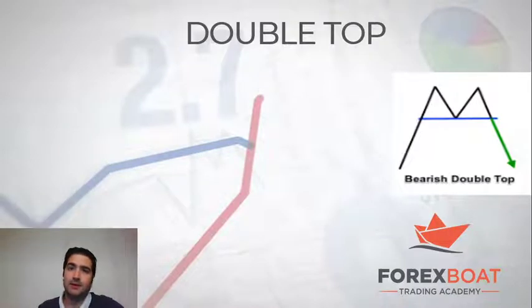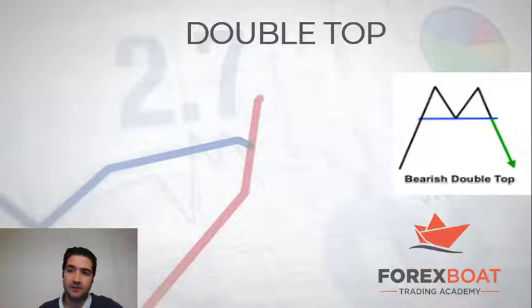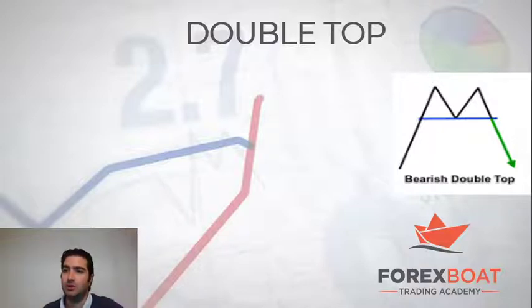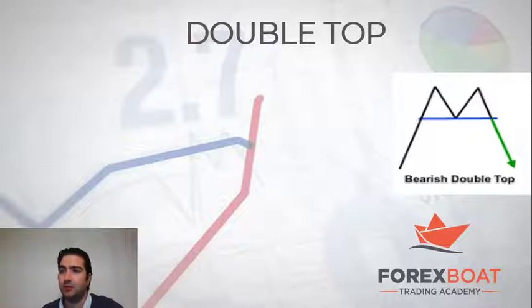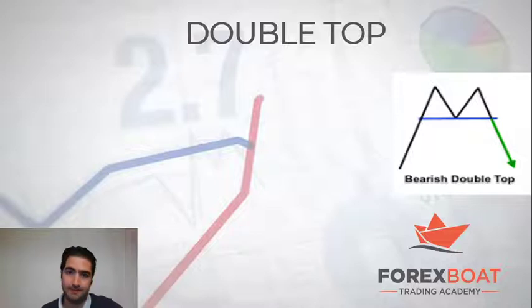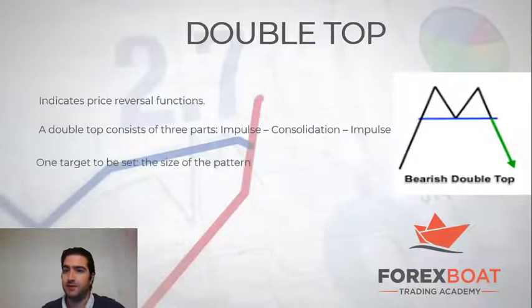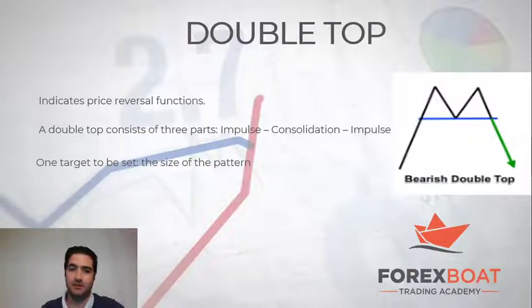A double top indicates a reversal. The price was in an upward movement, then it enters a consolidation in the form of the letter M. Then a downward movement is expected after the breakout of the neckline. Your stop loss is in the middle of the pattern. Your target profit is the size of the pattern.